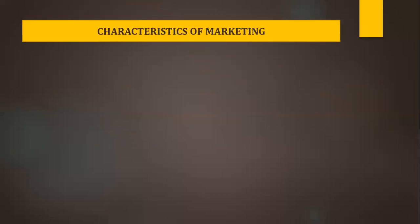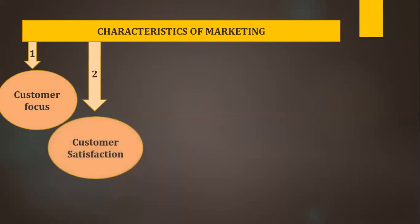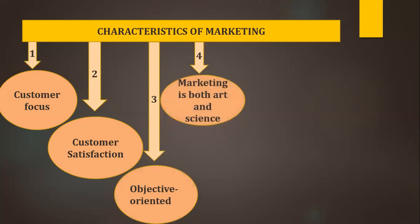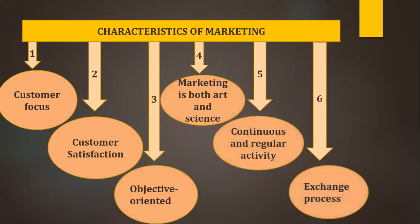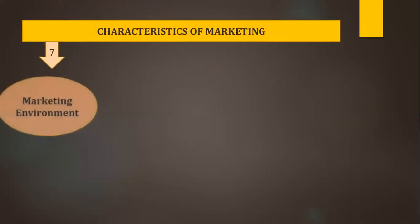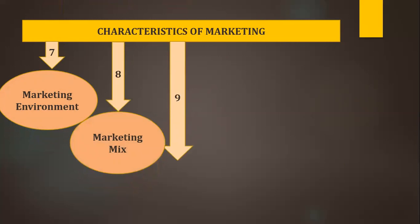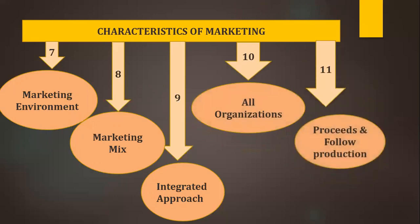Let us look at the features of marketing. I want you to write down all these features. First: customer focus. Second: customer satisfaction. Third: objective oriented. Fourth: marketing is both art and science. Fifth: continuous and regular activity. Sixth: exchange process. Seventh: marketing environment. Eighth: marketing mix. Ninth: integrated approach. Tenth: all organizations. And eleventh: precedes and follows production.